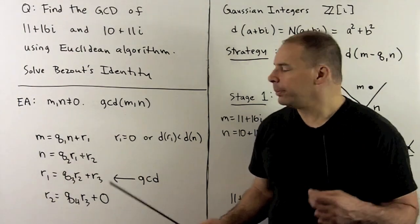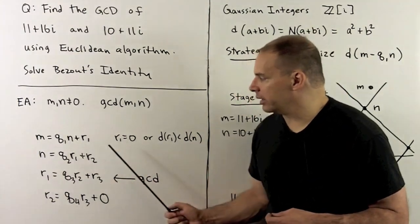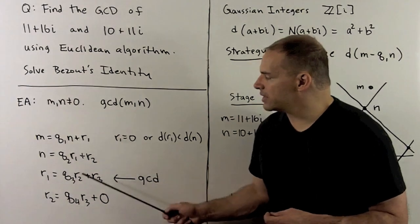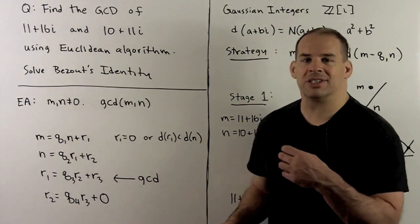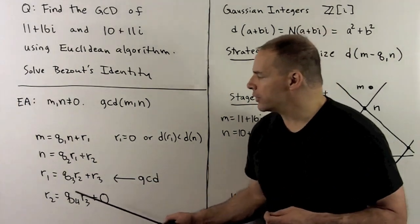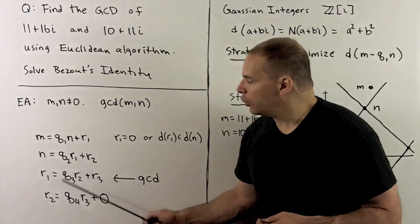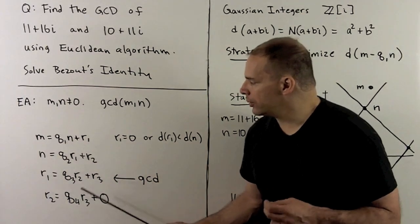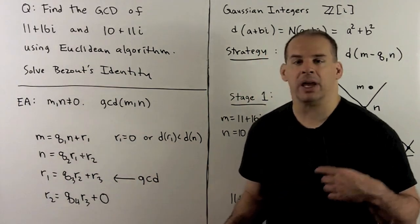For the Euclidean algorithm, we solve this equation repeatedly. As I go from step to step, we just push our coefficients to the left by one. So if I have m, n, r1, we go to n, r1, r2, then we go to r1, r2, r3, and so on.